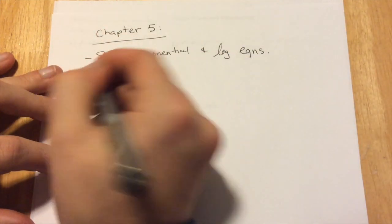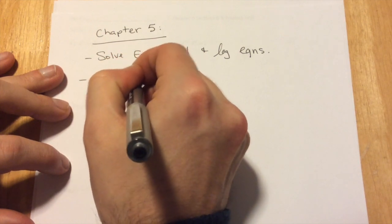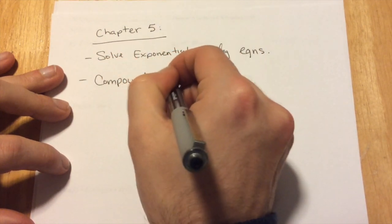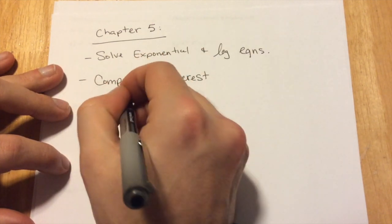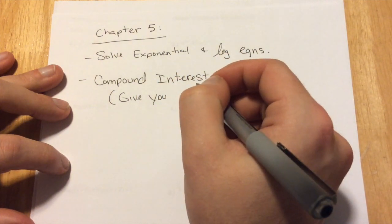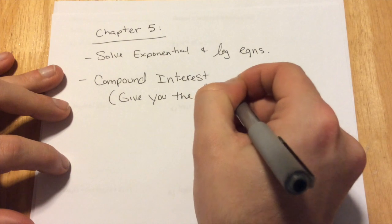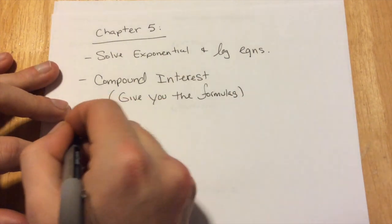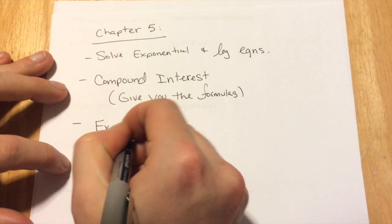So that's the first part. The second part we talked about was compound interest. And I'm going to give you guys the necessary formulas and all you have to do is be able to apply each one of those formulas. And then the last thing that we talked about was exponential growth and decay.